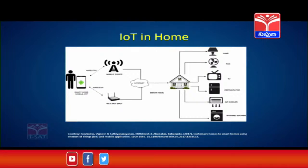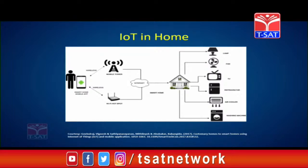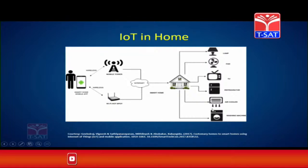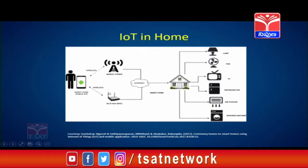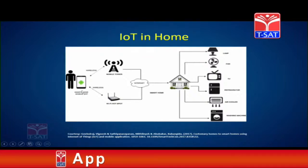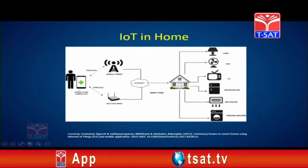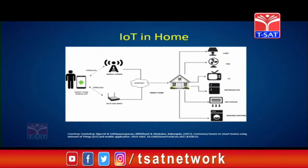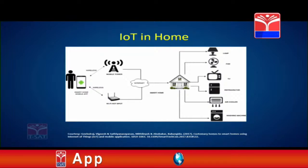In home automation, your fan, bulb, TV, and other devices can be connected through appropriate sensors to a gateway. Then, through an internet network, you can connect to all these devices through your smartphone — and you have an automated home network. Through your smartphone, you can operate your lights, fan, TV, refrigerator, and washing machine, giving you an automated home environment.